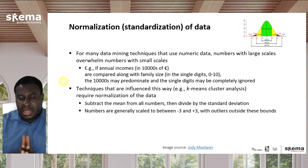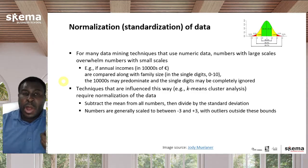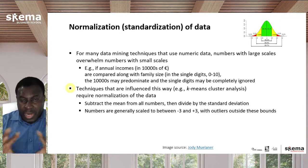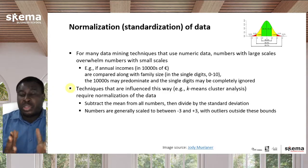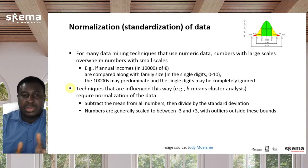Techniques that are influenced like this, such as K-means cluster analysis and outlier detection, among others, require the normalization of data. Normalization means a very simple arithmetic transformation of each of these data points where you subtract the mean of the attribute from all the numbers in that attribute, and then you divide by the standard deviation.